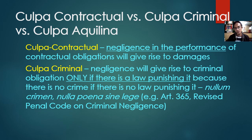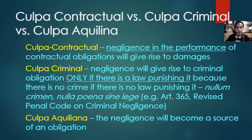Culpa aquiliana, or quasi-delict or torts, is negligence that becomes a source of obligation because it is not criminal. To recap the three types of culpa: culpa contractual is negligence in the performance of a contract — there is an existing contract; culpa criminal is negligence that is made criminal by a law punishing it — no contract involved between victim and negligent person; culpa aquiliana is negligence that is not criminal and has no contract — it is only a source of civil obligation to indemnify the person harmed.